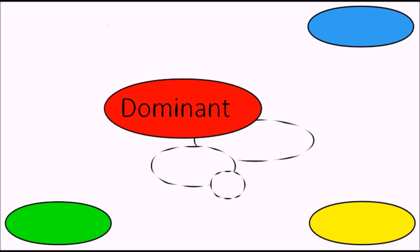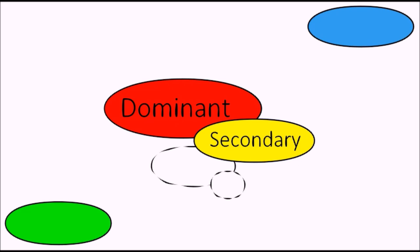Each person also chooses a dominant function, one of these four, which is their favorite to use. It is the function they develop first, usually by age seven, and is the one they are most skilled at using. By age 20, they have also developed what's known as the auxiliary or secondary function. This is used to support the dominant function. Together, these two functions often make up 75% or more of a person's behavior.